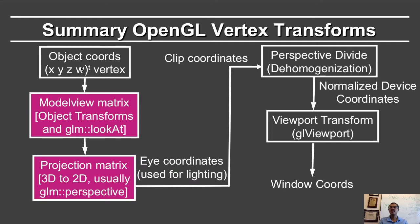We start with an object defined in object coordinates — that's in the native coordinate system of the object. In our case, this will always be in homogeneous coordinates x, y, z, w. Thereafter, you apply the model view transforms, which corresponds to the model view matrix. Note that this has both a model transformation, which is the object transformation, and the view transformation, which is GLM::lookat, which positions the camera appropriately.